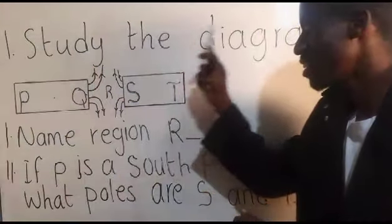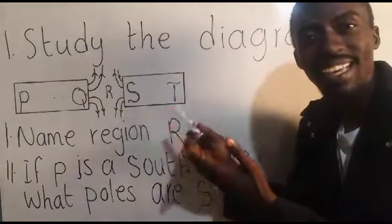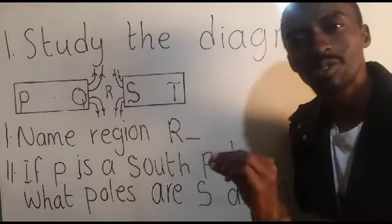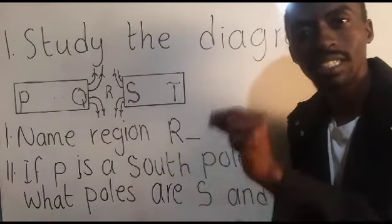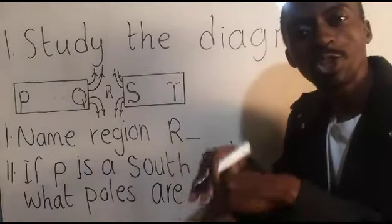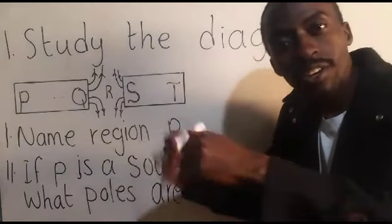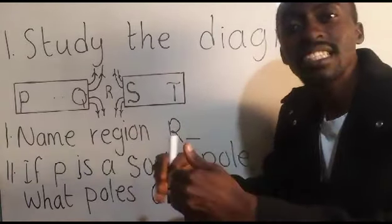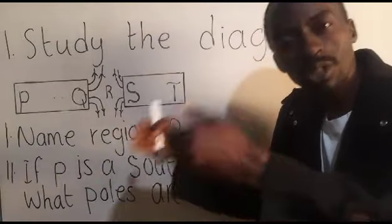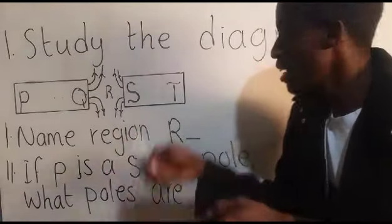Study the diagram. This diagram here is what we call a magnetic field diagram. It is a diagram showing the attraction or the repelling of the magnetic field lines being produced by bar magnets.